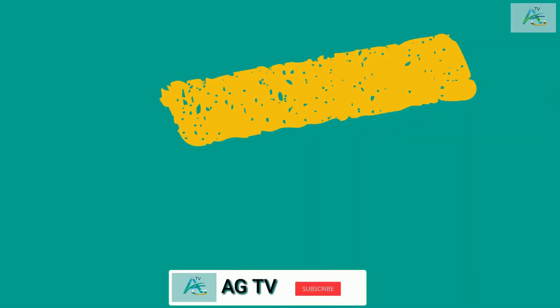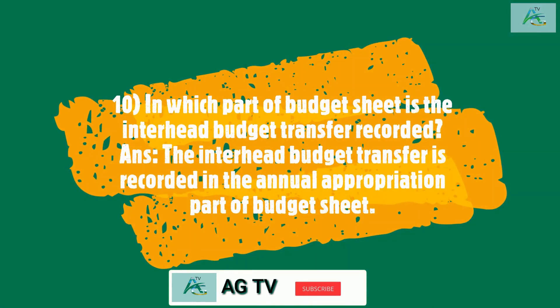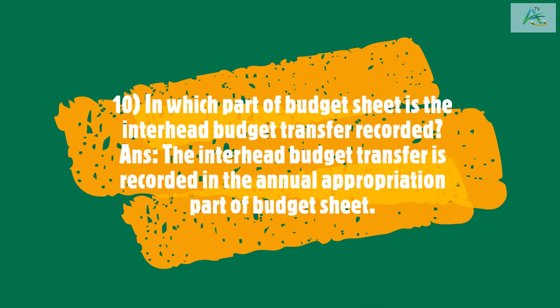In which part of Budget Sheet is the Interhead Budget Transfer recorded? The Interhead Budget Transfer is recorded in the Annual Appropriation Part of Budget Sheet.